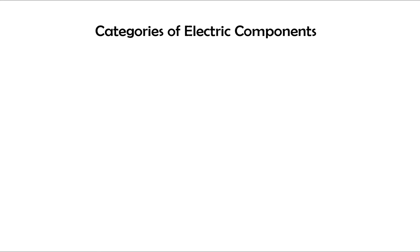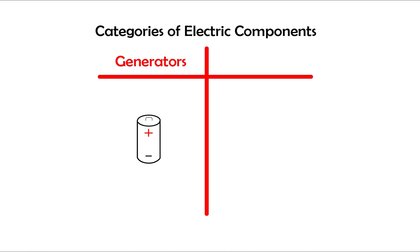There are two main categories that most electric components fall under. The first one is those elements that generate energy, such as the battery in our example. The second category consists of components that consume energy, like the light bulb. There is a third category of components that don't generate or consume power, but rather act as a storage unit. We'll talk about storage components later on.